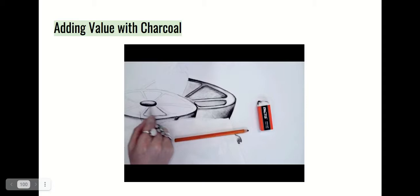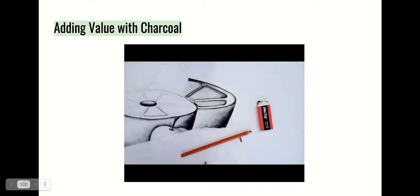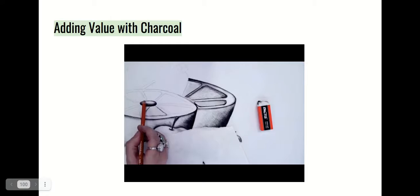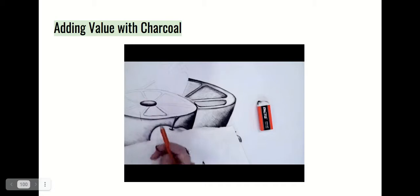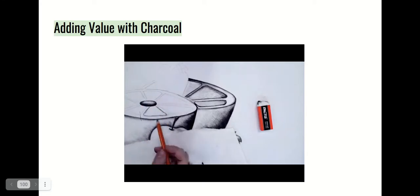I use the tortillion to add more definition. As you can see, I created value by starting dark and layering up, then lightening my pressure on the charcoal pencil as I moved around the edges, making sure I wasn't over-blending. I'm going to do one more part with you just so you're aware of how to add value.